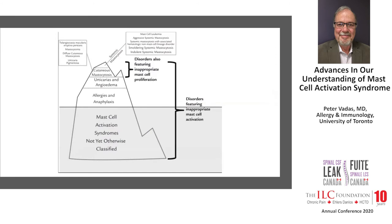This is an iceberg depiction of various types of mast cell disorders. The rarest is at the very top — mast cell leukemia — and underneath are various types of systemic and cutaneous mastocytosis, then secondary forms like urticarias, hives, swelling, and anaphylaxis. At the base, the most common presentations are the mast cell activation syndromes, typically called idiopathic mast cell activation syndrome.